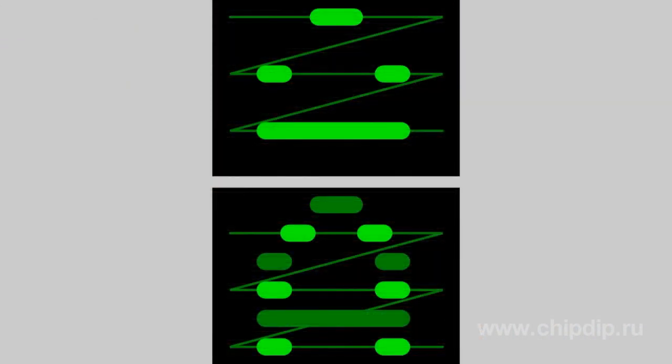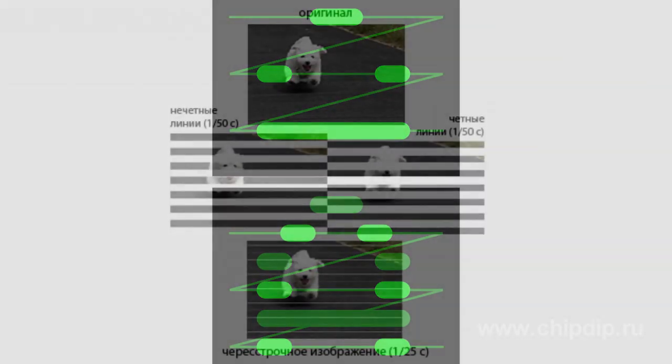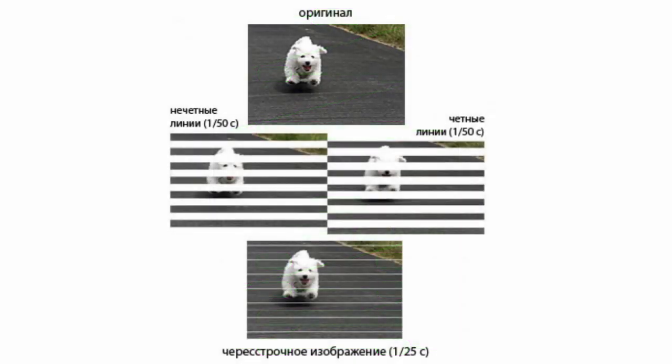This scanning mode is based on scanning of two sets of alternating lines transmitted in two attempts. The lines are displayed not sequentially but next nearest.